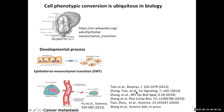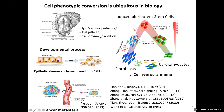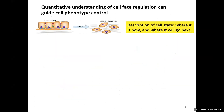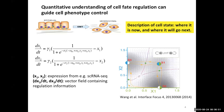Another example is cell reprogramming. Terminally differentiated cells, like fibroblasts, can be reprogrammed into induced pluripotent stem cells, which can then be induced to other phenotypes like cardiomyocytes, or there can be direct conversion between fibroblasts and cardiomyocytes. Cell reprogramming has very important medical applications and suggests that one can manipulate cell phenotype. Therefore, we want to control cell phenotypes, and quantitative understanding of cell phenotype regulation will be very helpful.